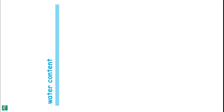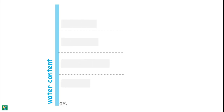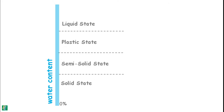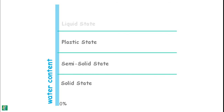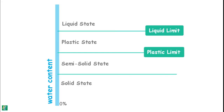Depending upon the water content, soil may appear in one of four states: liquid state, plastic state, semi-solid state, and solid state. Consistency limits are the water contents at which the soil changes from one of these four states to another. These limits are liquid limit, plastic limit, and shrinkage limit.